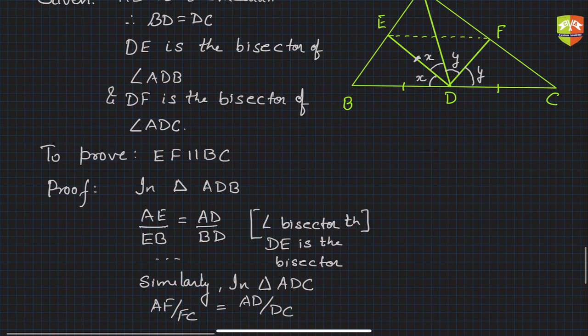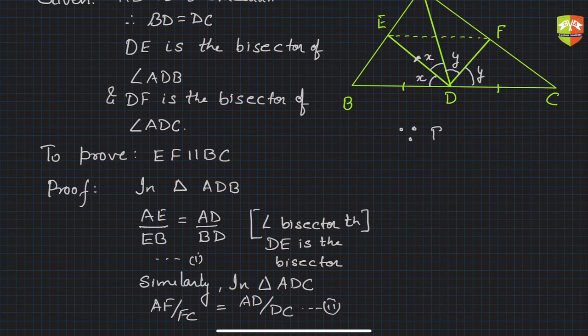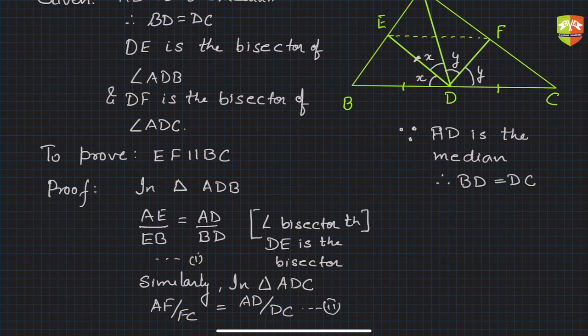Let equation one be AE/EB = AD/BD, and equation two be AF/FC = AD/DC. Now since AD is the median, it means BD is equal to DC. Therefore from equations one and three, what do we get?